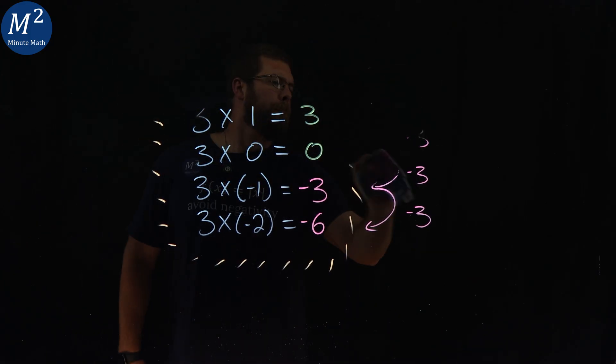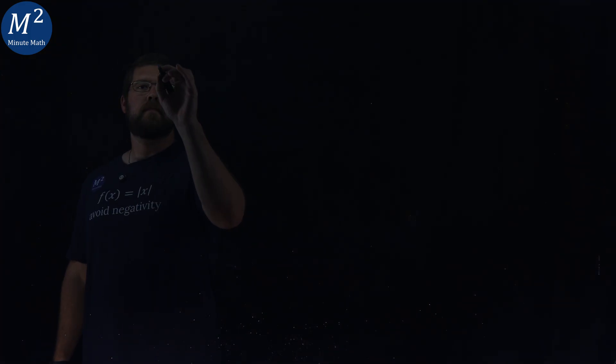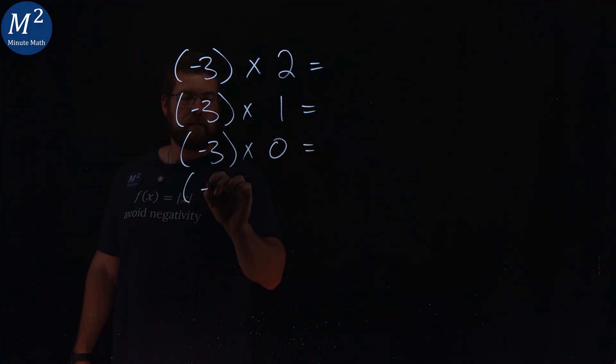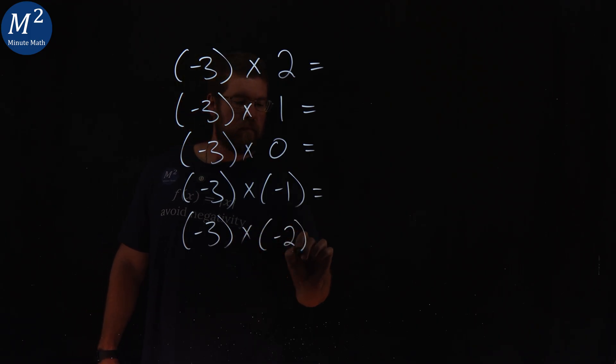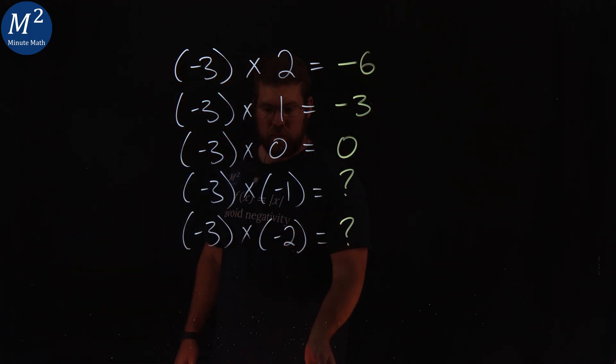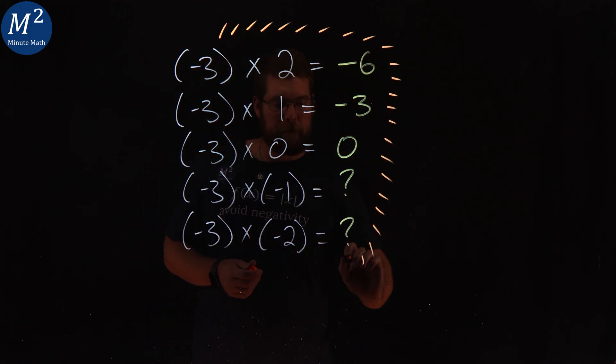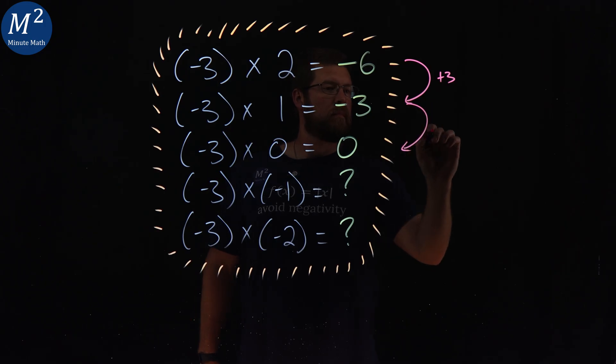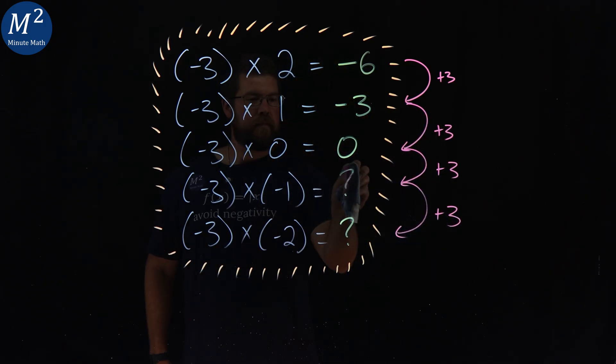Now, let's flip the sign of the first number. Watch what happens. As we decrease the second factor by 1 each time, the product increases by 3. That means the next products must be positive. Negative 3 times negative 1 equals positive 3, and negative 3 times negative 2 equals positive 6.